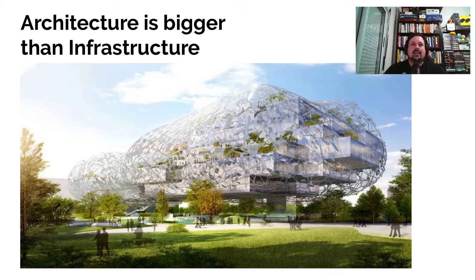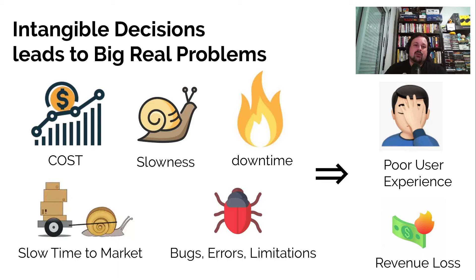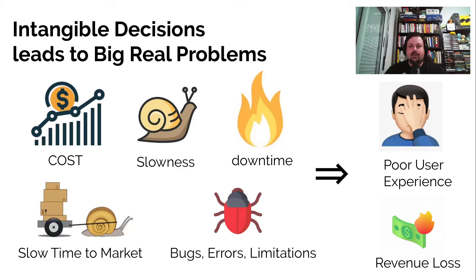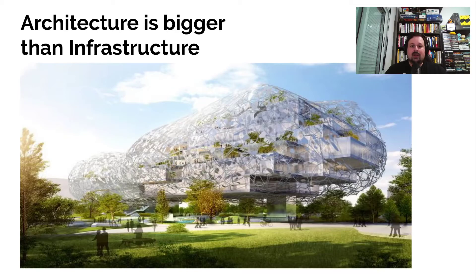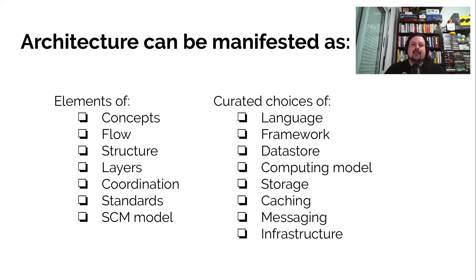Lots of folks today imagine that architecture is only about cloud. You could look at these problems and say: if there's a cost issue, maybe you're spending too much on AWS or Google Cloud; if there's slowness, you're using the wrong instance profile; if there's downtime, you're lacking SRE/DevOps work; if there's slow time to market, the team isn't agile enough; and if there are bugs, it's a testing problem. That could be the case — but it could also be because of the architecture. The architecture could be the source of all of these things, and architecture is not limited to the cloud.